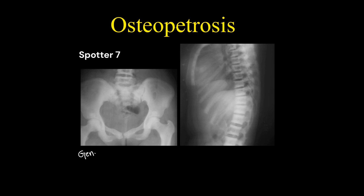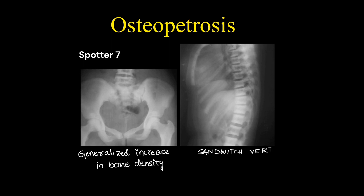In the case of osteoporosis, there is a generalized increase in bone density and there is sandwich vertebrae seen, where there is diffuse end plate sclerosis.